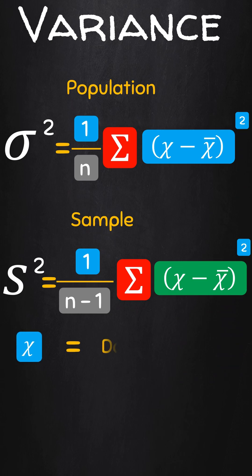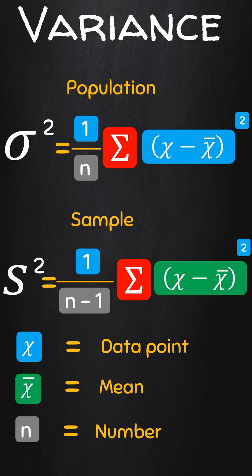Where x represents each data point in the data, x bar represents the mean of the data points, while n represents the number of data points.